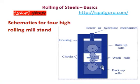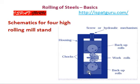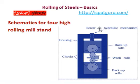This is the method of the four-high rolling mill stand. There are two backup rolls and two work rolls, and the workpiece passes through the work rolls. There are two shafts shown for the backup rolls. The screw-down mechanism can be either electrically driven or hydraulically driven. This is the stand which houses the rolls and shafts.